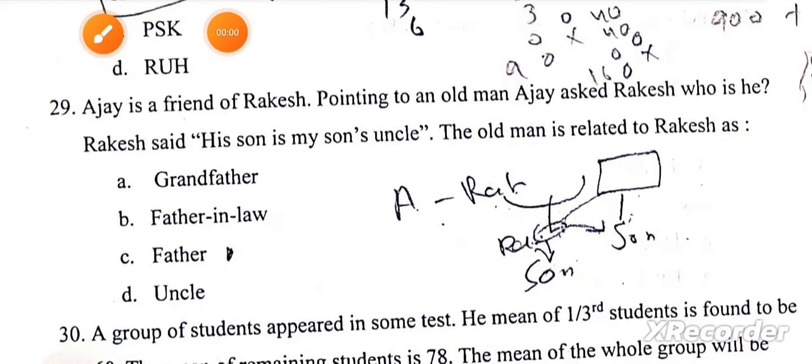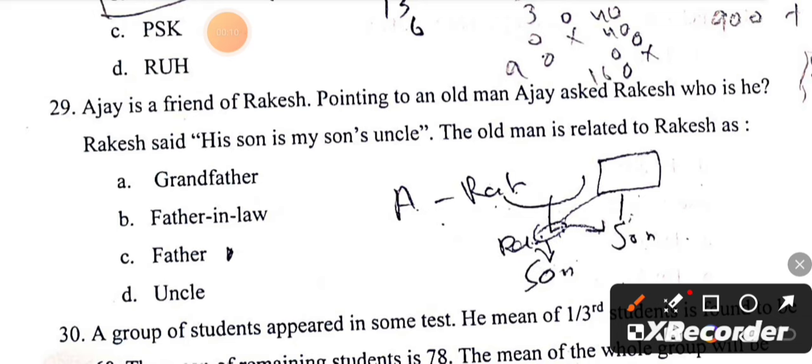The question says that Ajay is the friend of Rakesh. Pointing to an old man, Ajay asked Rakesh who is he. Rakesh said his son is my son's uncle. The old man is related to Rakesh as father.